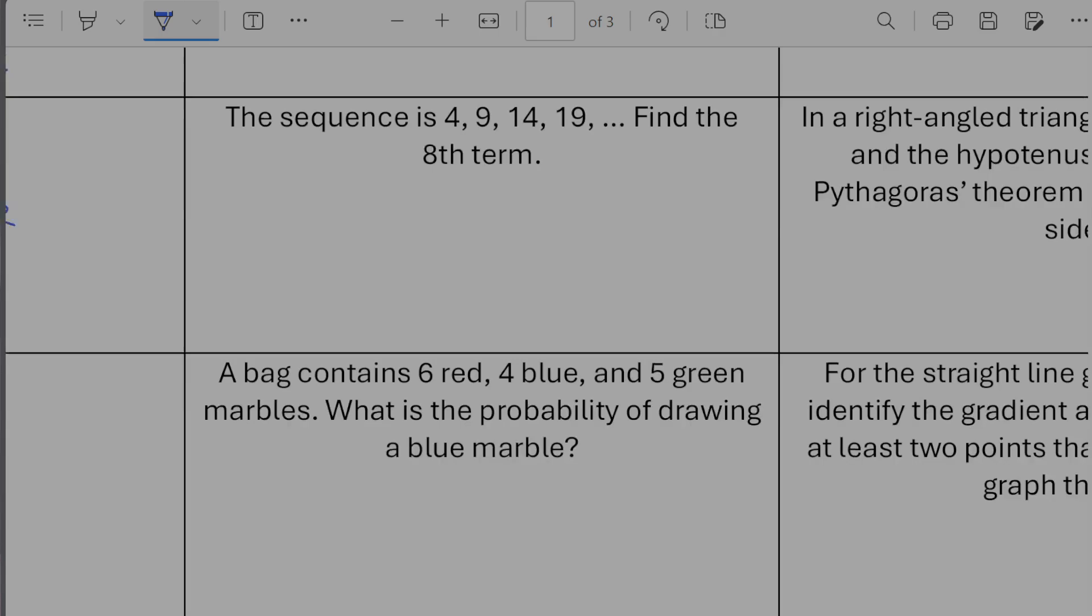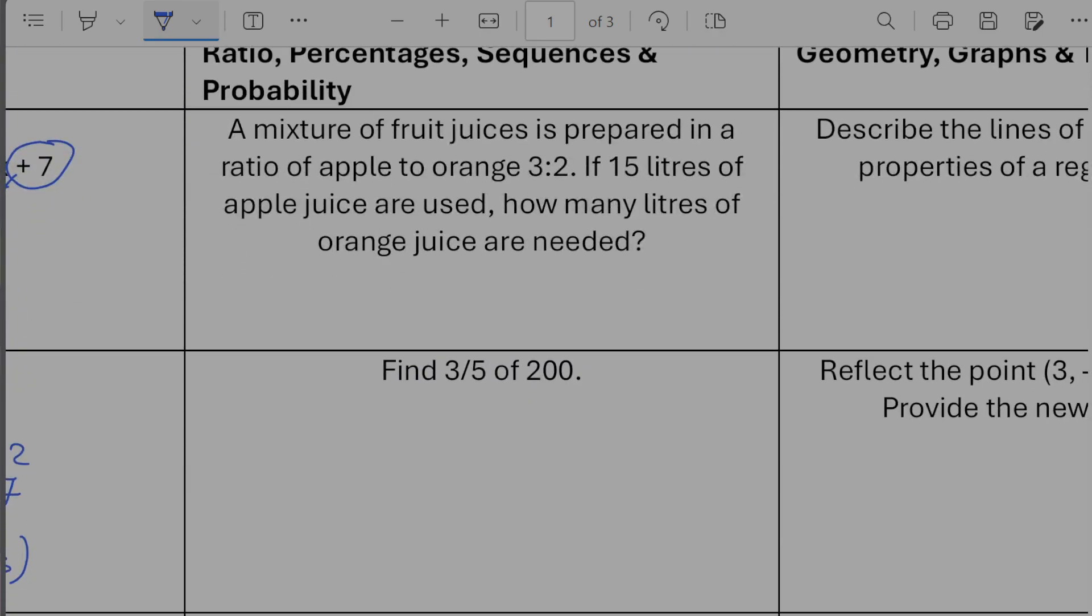Next column. So a mixture of fruit juice is prepared in a ratio of apple to orange of 3 to 5. If 15 litres of apple juice is used, how many litres of orange juice is needed? So we've got 3 to 5 is apple to orange, 15 of apple. Okay so we're just times by five here that's quite nice.